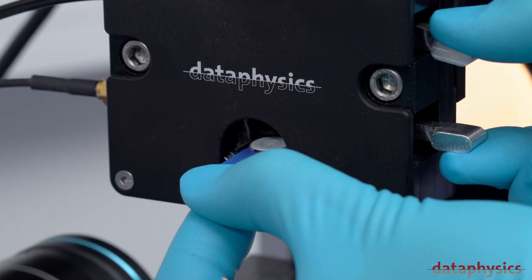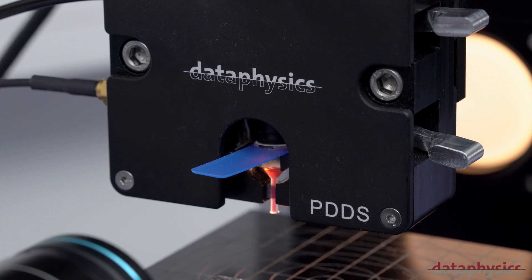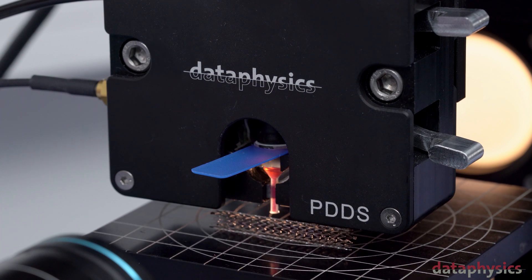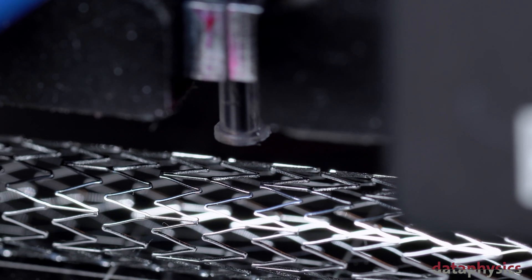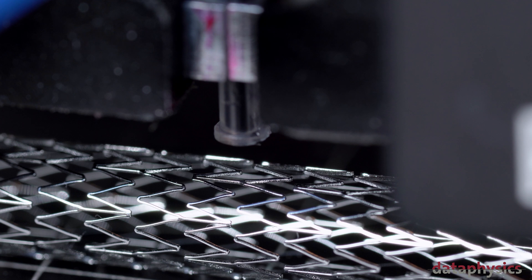The liquid-filled cartridge can be inserted into the dosing head very simply and without effort. With the motorized sample stage of the optical contact angle measuring system, the sample can be positioned precisely under the cartridge nozzle.